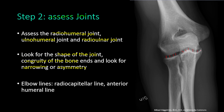For the ulno-humeral joint, you observe the joint space, check for narrowing or asymmetry, check the shape, and check the congruity of the bone ends — it looks normal here. The same applies for the radio-ulnar joint, which also looks normal.